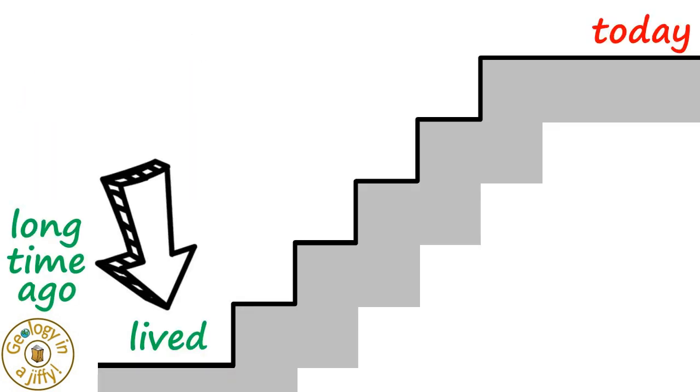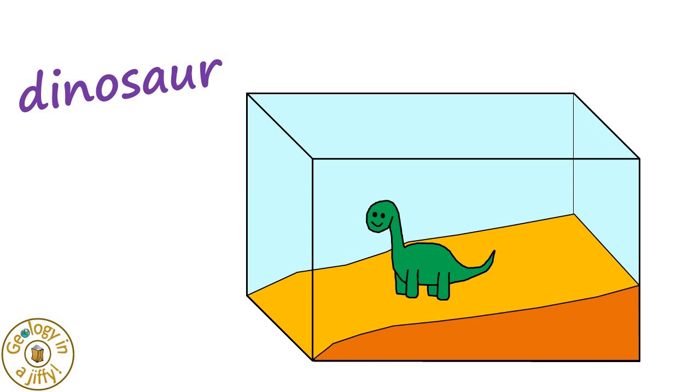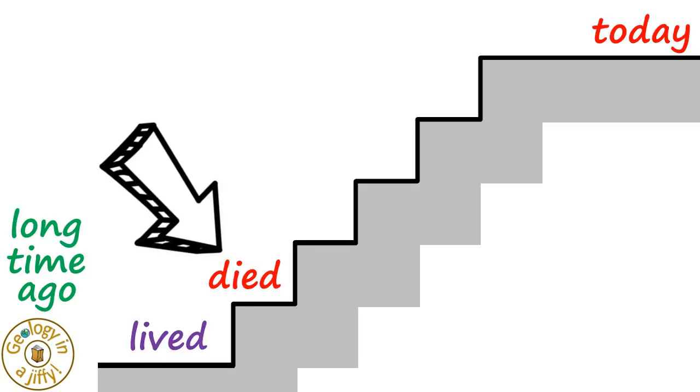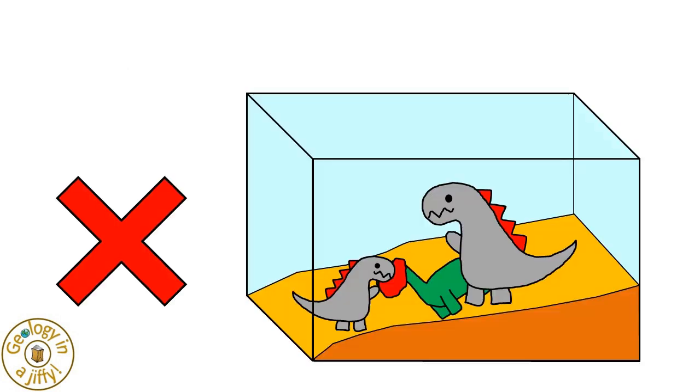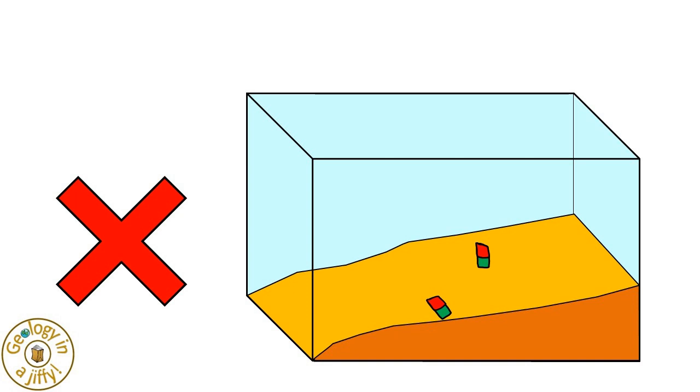But then, our dinosaur died. Our second step of fossilisation. But when the dinosaur died, what we did not want to happen is other dinosaurs eating our dinosaur, because nothing will remain of our dinosaur, so no fossil can form.